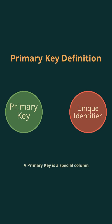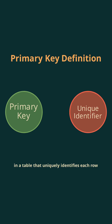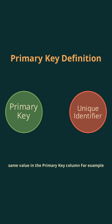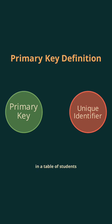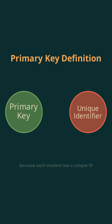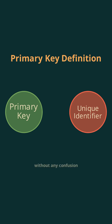A primary key is a special column or a set of columns in a table that uniquely identifies each row. This means no two rows can have the same value in the primary key column. For example, in a table of students, the student ID can be a primary key because each student has a unique ID. This helps us find and manage data easily without any confusion.